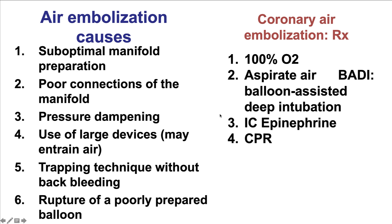If, despite precautions, air embolization occurs, the first step is to give 100% oxygen with a closed face mask. If the amount of air is small, it will often pass through the coronary arteries without needing further intervention, although there can be some transient ST segment changes. If there is a large amount of air, it might have to be aspirated — either through the guide catheter using the body technique or balloon-occlusive deep intubation, or through an aspiration catheter. If the patient develops cardiac arrest, intracoronary epinephrine can be given to help restore cardiac function, and cardiopulmonary resuscitation may be needed.